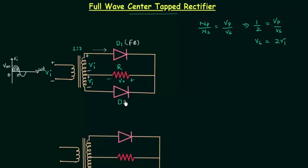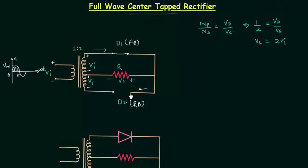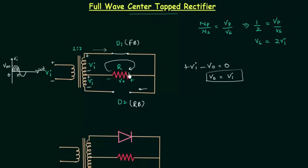Diode D2 is reverse biased because the direction of current flows from positive to negative terminal and the arrow is not matching the direction of current. I am considering both diodes to be ideal, so I will replace D1 with a short circuit and D2 with an open circuit. Applying Kirchhoff's voltage law in this loop: Vi plus Vi minus Vo equals 0, so the output voltage Vo equals Vi. The direction of current is from right to left.